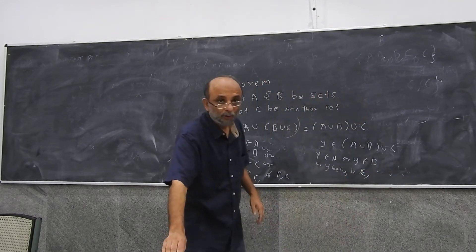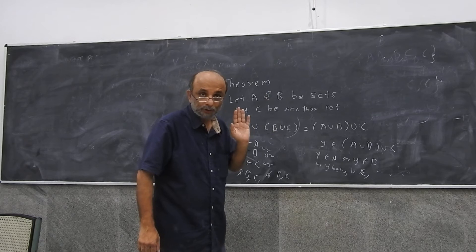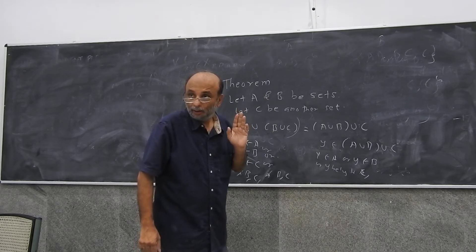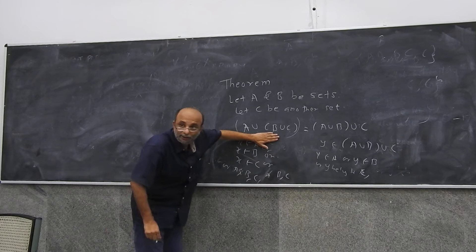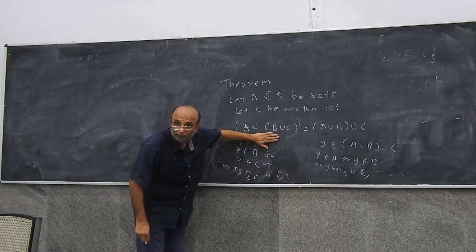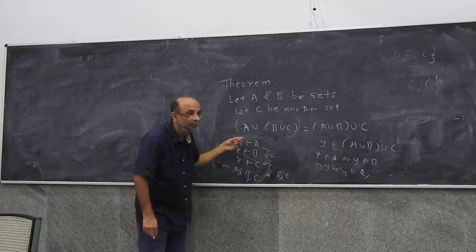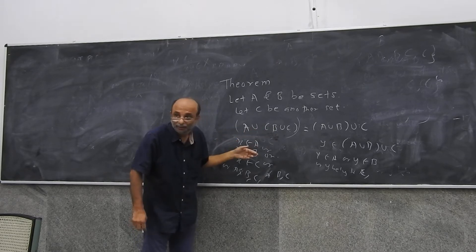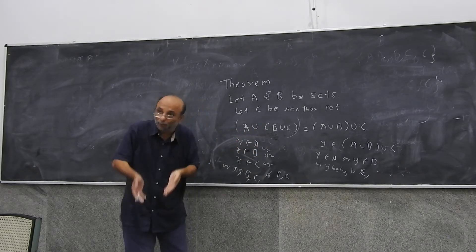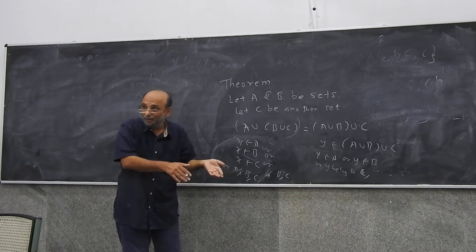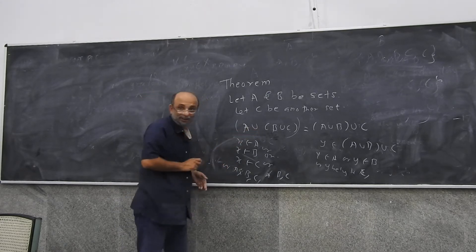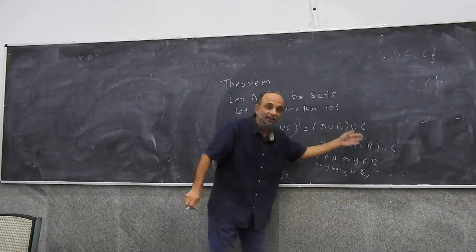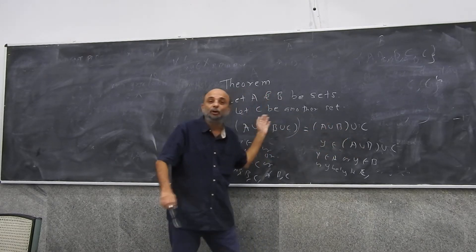Y either belongs to A, or B, or C. Now, is it possible for this Y to not be in this collection? Because what is this a collection of? This is a collection of elements which are common to A, B, and C. So this Y either has to belong to A, or to B, or to C. And therefore this Y must belong to either A, or B, or C. So you can't have a Y in this collection but not in this collection.